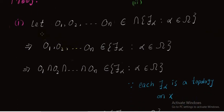Now we move to the first condition. Let O₁, O₂, ..., Oₙ belong to the intersection τ_α (α ∈ Ω). We have taken n elements from this intersection. Since these elements belong to the intersection, they belong to each τ_α. We can then write that O₁ ∩ O₂ ∩ ... ∩ Oₙ belongs to τ_α for each α ∈ Ω, since each τ_α is a topology on X.